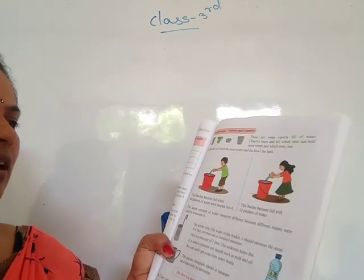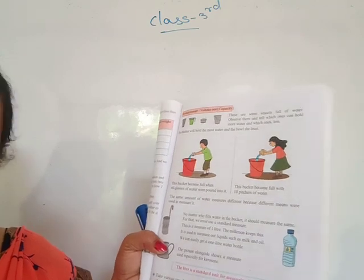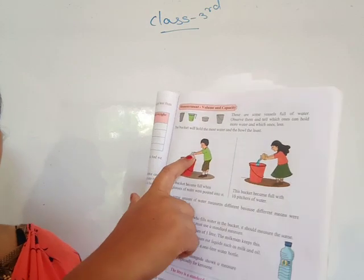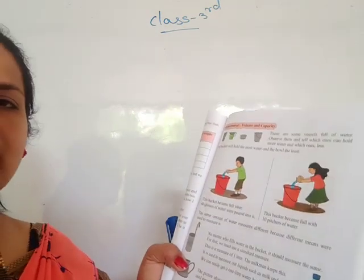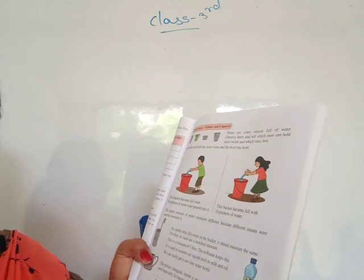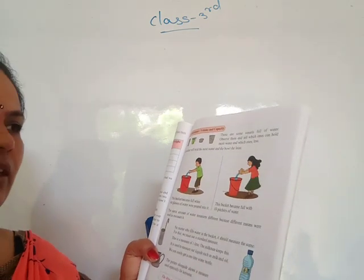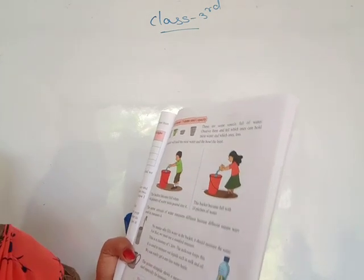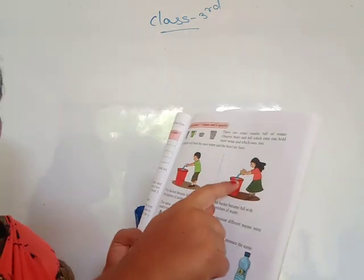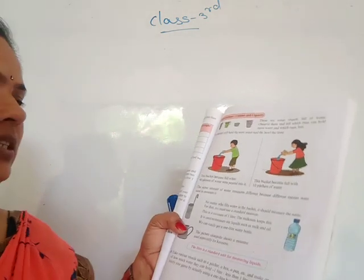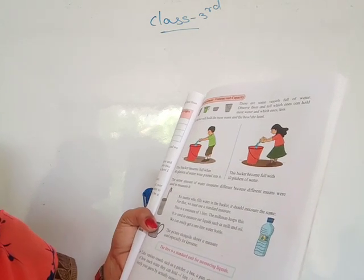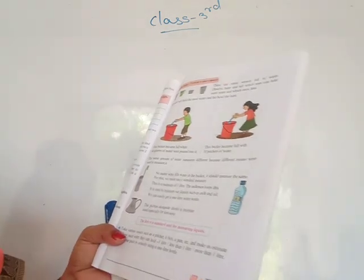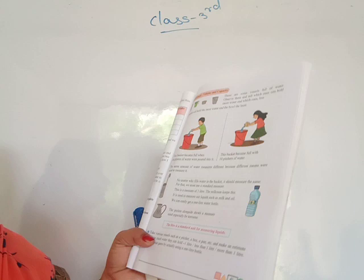This first picture here: this bucket became full when 40 glasses of water were poured into it. The second bucket became full with only 10 pitchers of water. The same amount of water measures differently because different means are used to measure it.